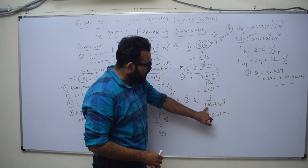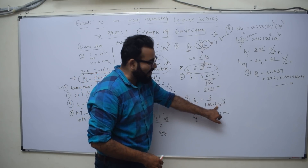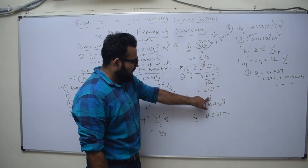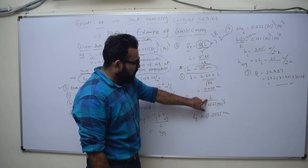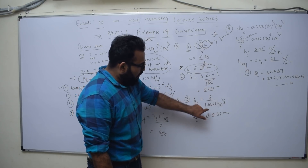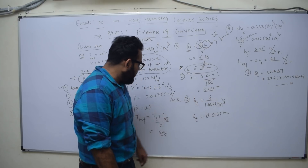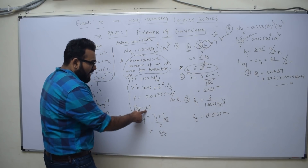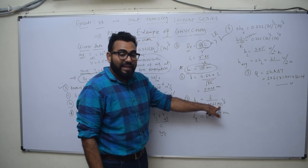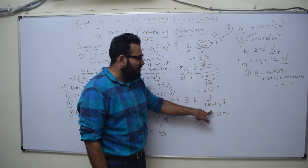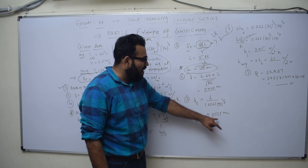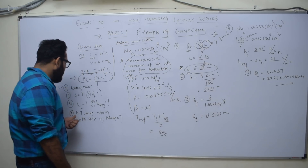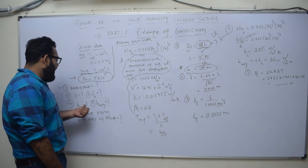The thermal boundary layer equation is: δ_th = δ / (1.026 × Pr^(1/3)). The value of δ from the previous step is, say, 0.0123. Prandtl number is 0.7. So place 0.7 raised to 1/3 here. Whatever you get will be your thermal boundary layer answer.